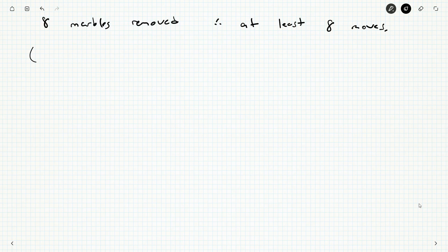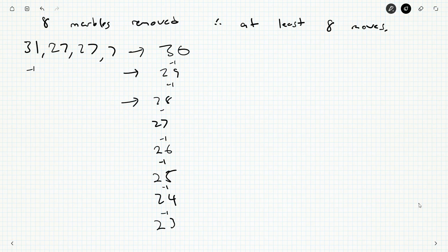So now I want to describe my sequence of moves. So 31, 27, 27, and 7. These two 27s are going to be a tad pesky. So we might have to add something to them at some point. Every move we're going to be doing, we're getting rid of something here. So it'll be 30 and then 29, and then 28, 27, 26, 25, 24, and then finally down to 23.